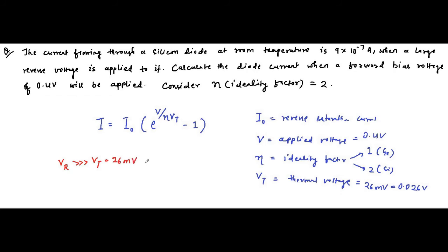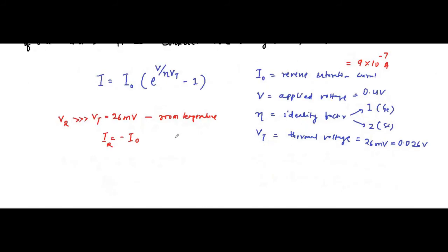This means the reverse bias voltage is much greater than the thermal voltage. At room temperature, when this condition holds — when a large reverse bias voltage is applied — the reverse current which flows through the diode is equal to the reverse saturation current. So instead of directly saying that the reverse saturation current is 9 × 10⁻⁷ ampere, it has been given indirectly. So the reverse saturation current here is equal to 9 × 10⁻⁷ ampere.